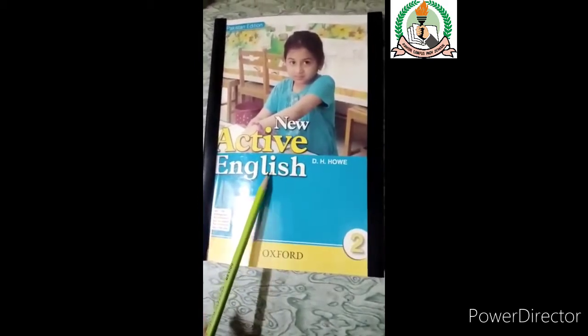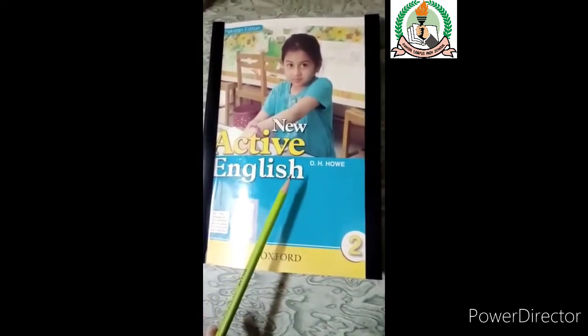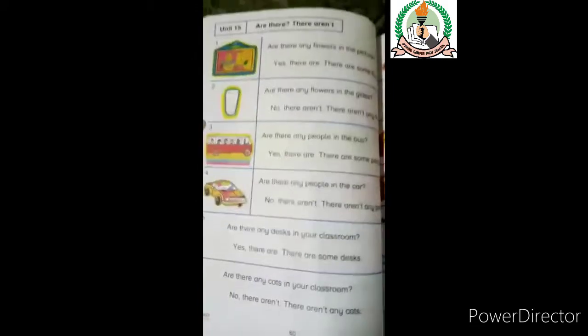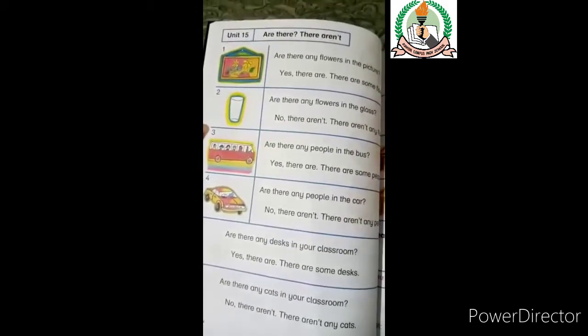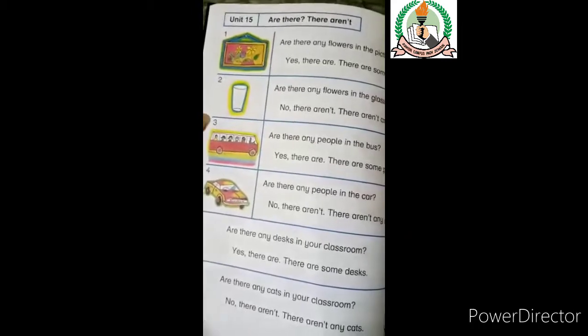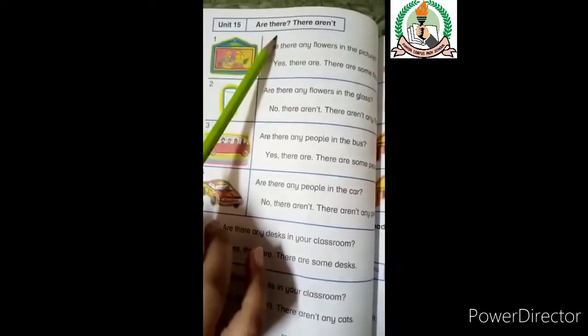Please open your books and go to page number 60. Hopefully you will be able to get to page number 60. Today's concept is 'How are there?' — we show more things.